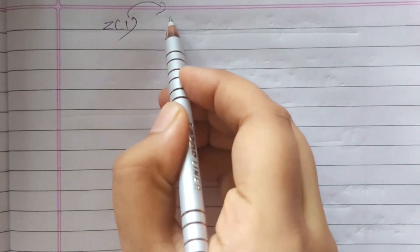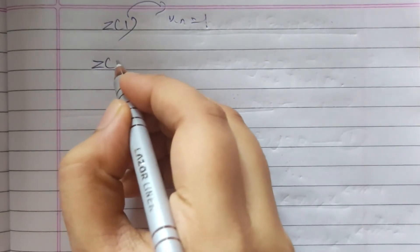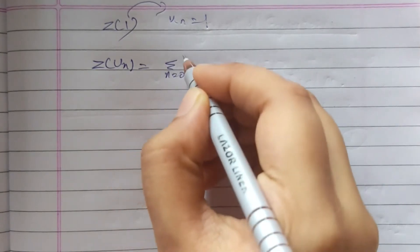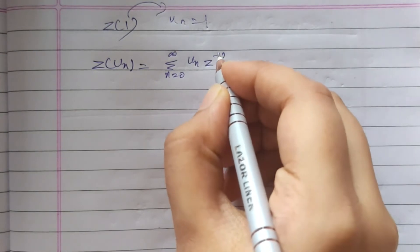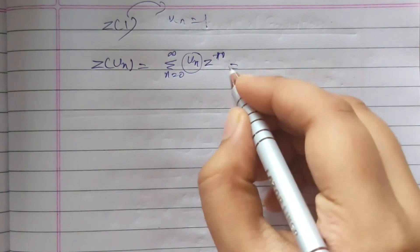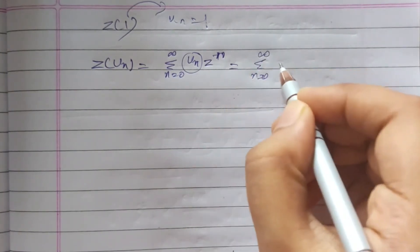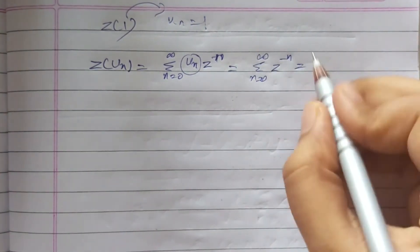Let us take a few examples. Z transform of 1: the function here is u(n) = 1. Using the formula, Z{u(n)} = summation from n=0 to infinity of u(n) * z^(-n). In place of u(n) we substitute 1, giving us summation from n=0 to infinity of z^(-n).